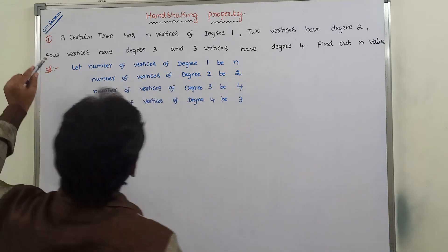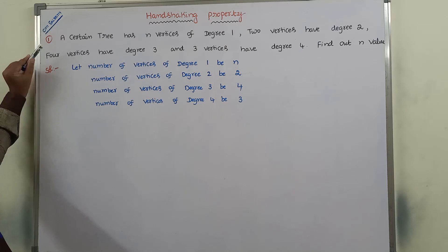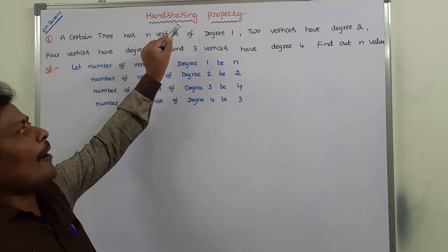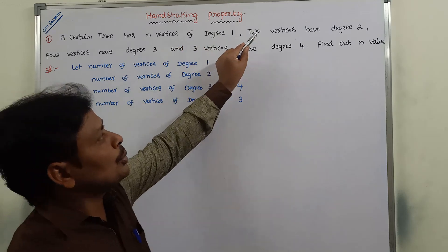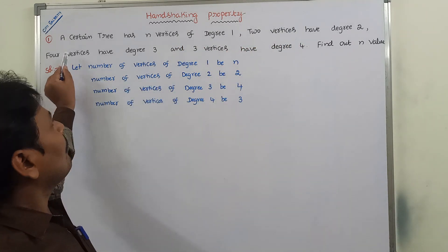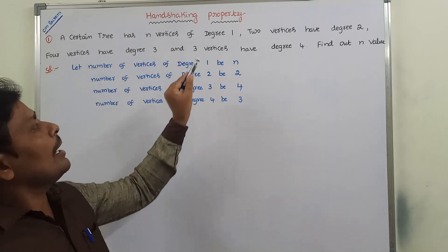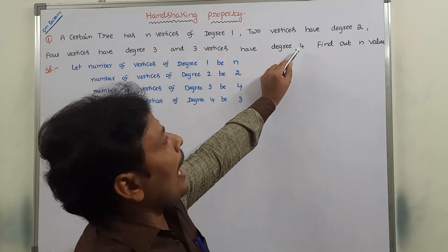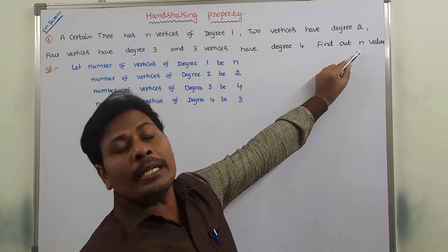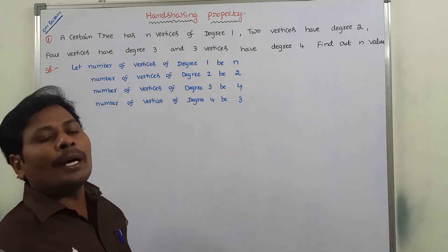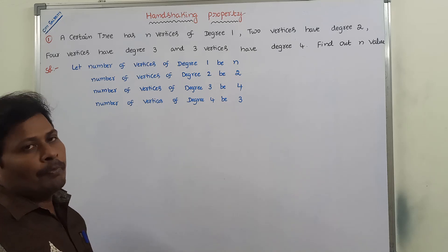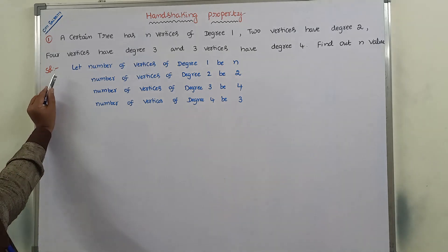The given problem is: a certain tree has n vertices of degree 1, 2 vertices of degree 2, 4 vertices of degree 3, and 3 vertices of degree 4. Find the value of n, where n is the number of vertices in the given tree.